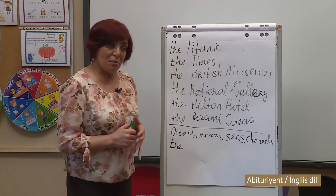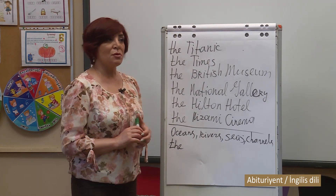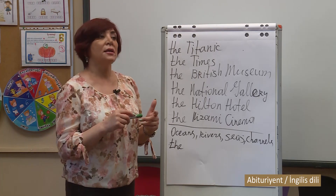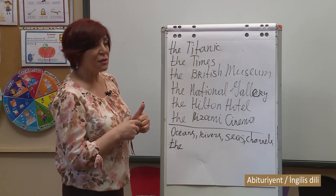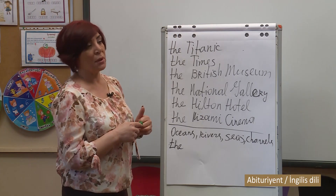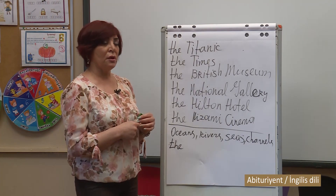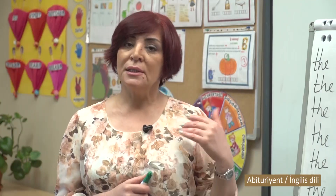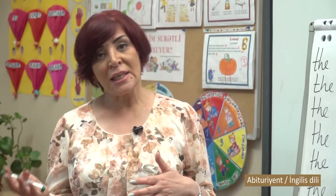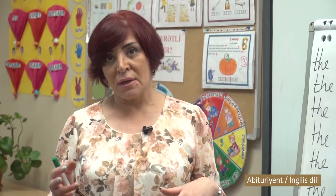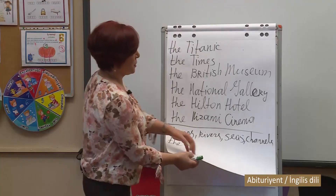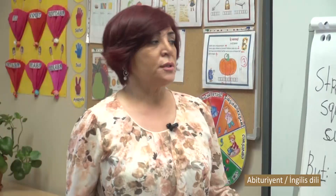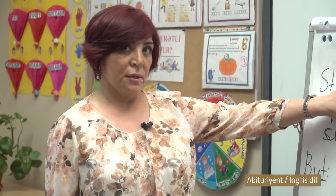As you remember, dear friends, with the names of oceans, seas, rivers, and channels, the definite article is used. For example: 'the Pacific Ocean,' 'the Indian Ocean,' 'the Black Sea,' 'the Caspian Sea,' 'the Mediterranean,' 'the Kura,' 'the Araz,' 'the Nile,' 'the English Channel,' and so on.